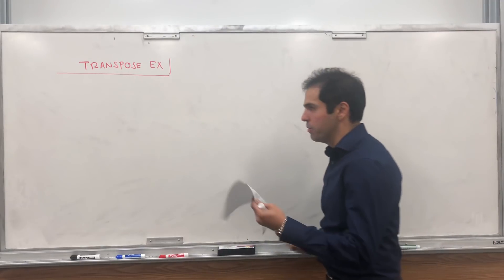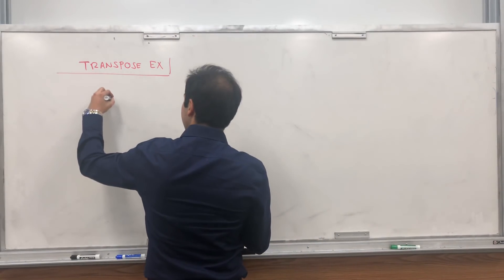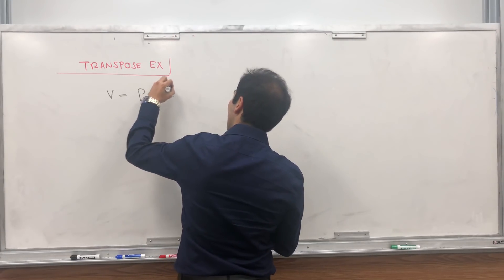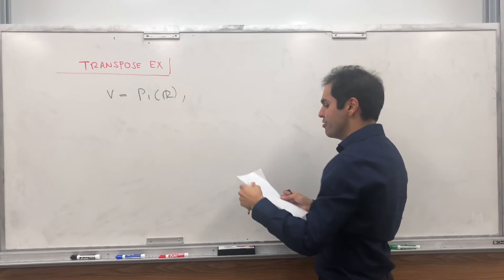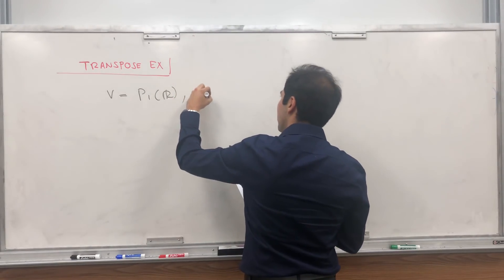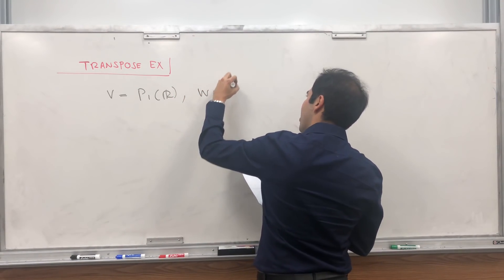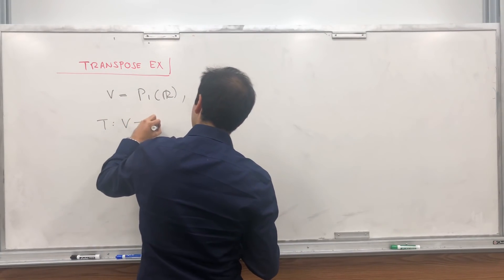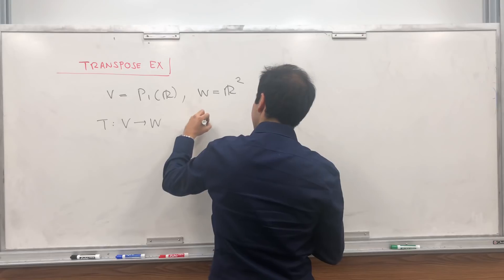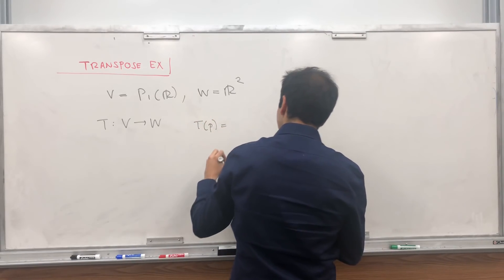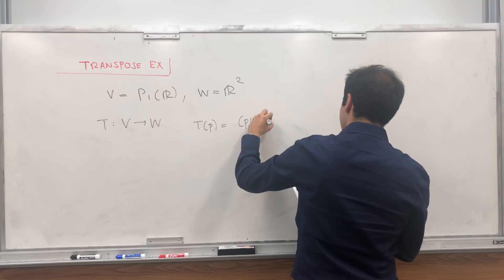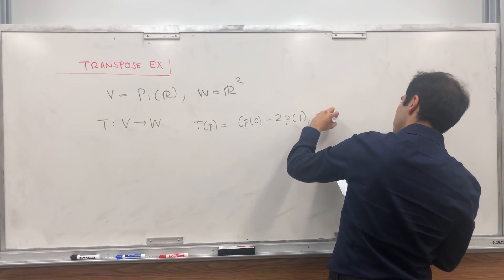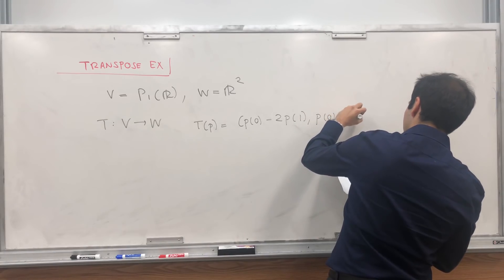So maybe the example will help you. Let V be the space of polynomials of degree less than or equal to 1, so the space Ax plus B, and W be the space R2, and consider the following linear transformation T from V to W, where T of P evaluates P at 0 and subtracts P at 1, and does P of 0 plus P prime of 0.